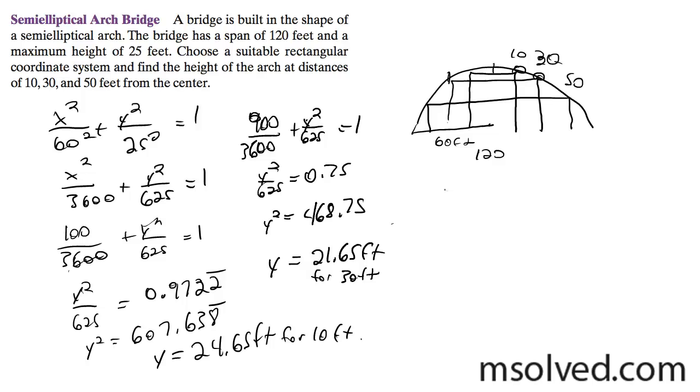And then finally, our last problem. 50 squared gives us 2500 over 3600 plus y squared over 625 is equal to 1.